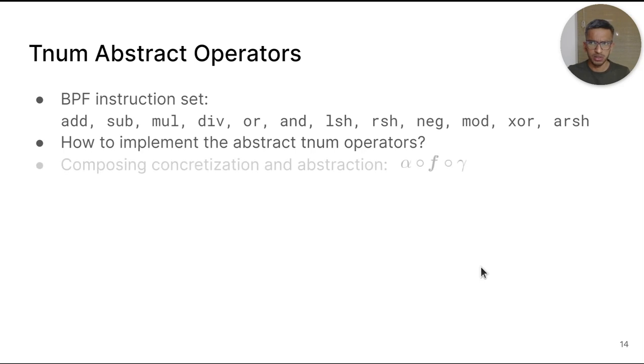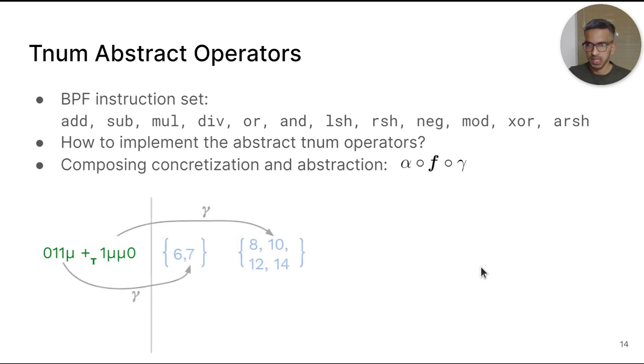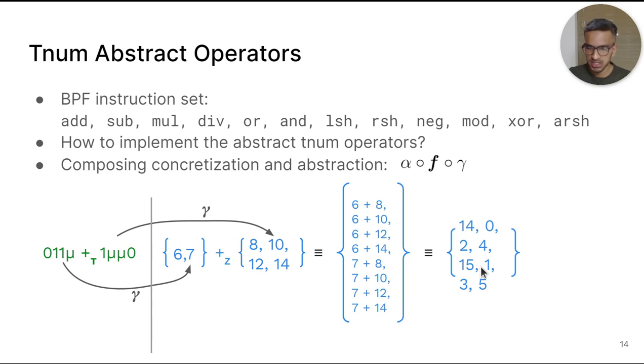But how to implement these operators? One standard way to do this is to concretize, do the operation F and then abstract, basically composing the concretization function, the operator function and the abstraction function. Let's say we are trying to come up with a way to do addition on TNUMs. The compositional way to do this would be to first take the two TNUMs and concretize them to obtain the sets that they abstract. Next, we do the concrete addition on the elements of these sets taken pairwise to obtain another set. Finally, we apply the abstraction function to get the final TNUM.